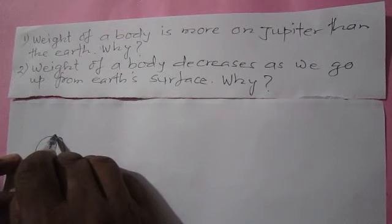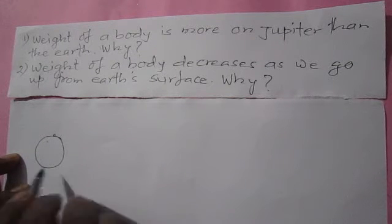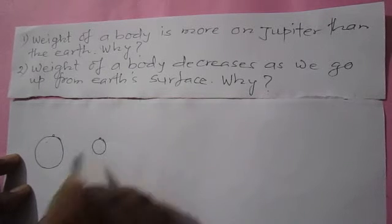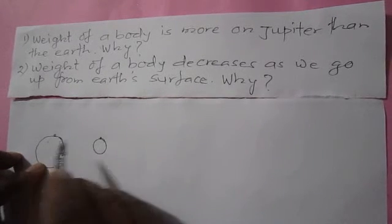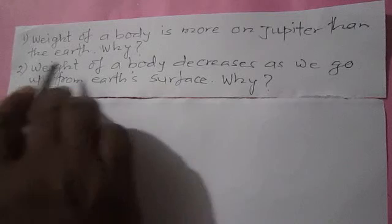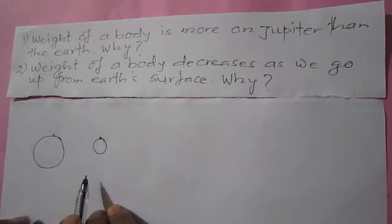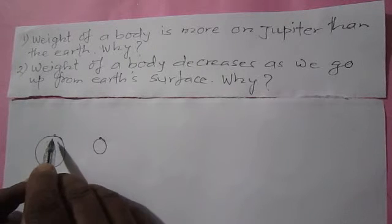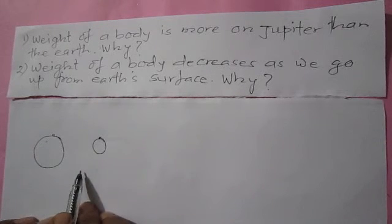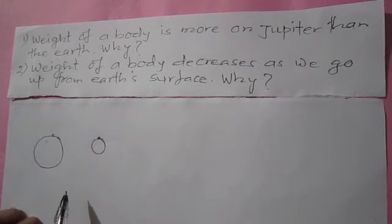Let's say this is Jupiter and a body is lying on its surface. The weight of the same body on Jupiter will be more, but the weight of the same body on Earth will be less. How can we answer this? The gravitational force between Jupiter and the body is the weight of the body on Jupiter, and the gravitational force between the Earth and the body is the weight of the body on Earth.